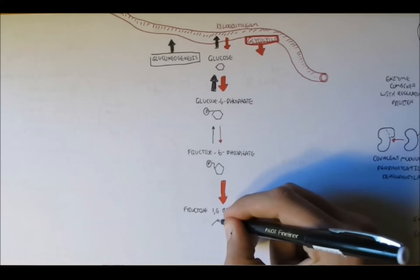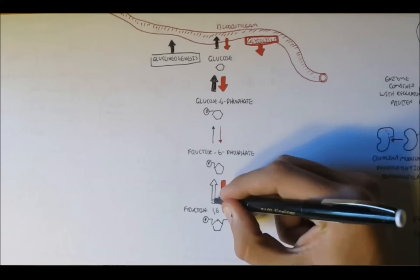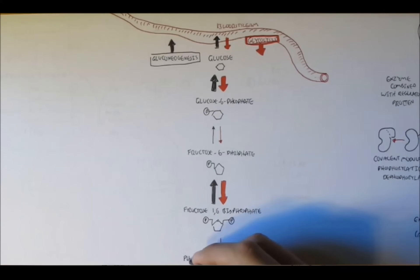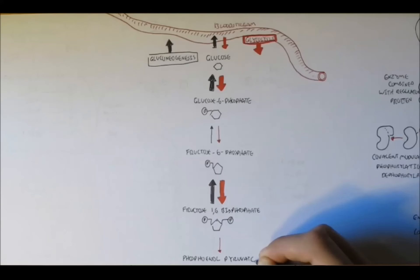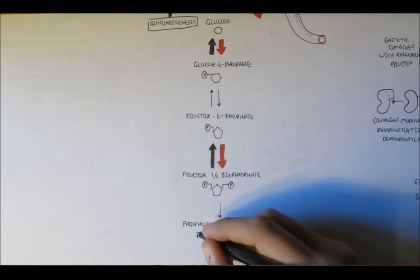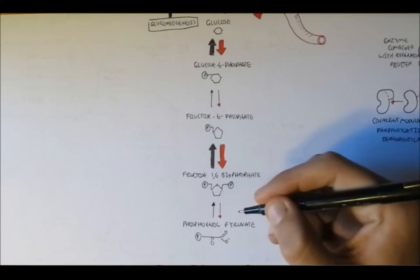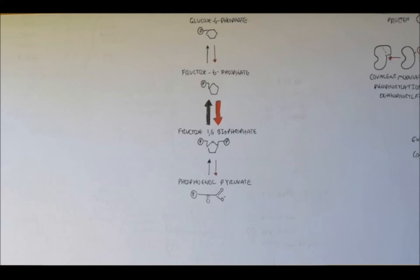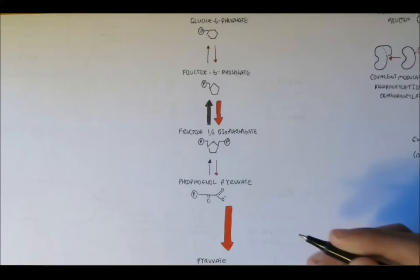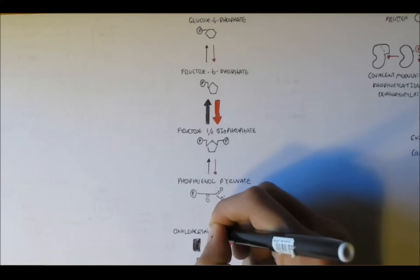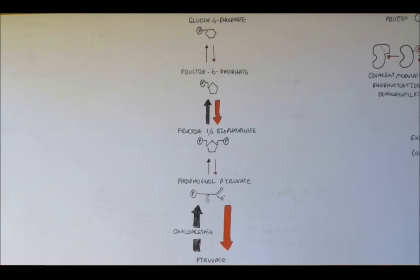Fructose-6-phosphate will then convert to fructose-1,6-bisphosphate. This reaction is irreversible, as indicated by the big arrow, and requires a different enzyme. Fructose-1,6-bisphosphate, after a number of reversible reactions (thin arrow), will become phosphoenolpyruvate — the precursor to pyruvate. Phosphoenolpyruvate can then convert to pyruvate. For gluconeogenesis, pyruvate to phosphoenolpyruvate is a two-step reaction, where pyruvate converts first to oxaloacetate, before converting to phosphoenolpyruvate.